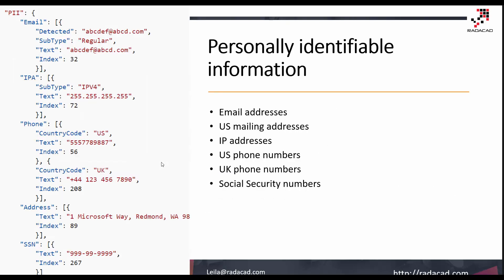The last feature is personally identifiable information (PII) detection. In most scenarios we don't want to disclose information like email, name, or address. This service is able to detect email addresses, US mailing addresses, IP addresses, US phone numbers, UK phone numbers, and social security numbers.